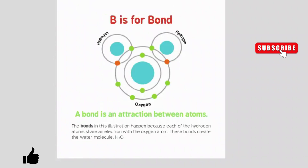B is for bond. A bond is an attraction between atoms. The bonds in this illustration happen because each of the hydrogen atoms share an electron with the oxygen atom. These bonds create the water molecule H2O.